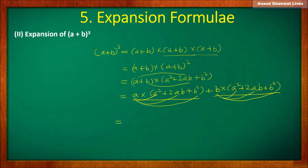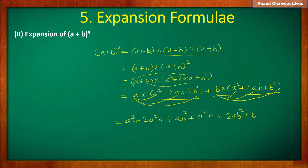It is equal to: a into a squared, that is a cubed; plus a into 2ab, that is 2a²b; plus a into b squared, that is ab squared; plus b into a squared, that is a squared b; plus b into 2ab, that is 2ab squared; plus b into b squared, that is b cubed.